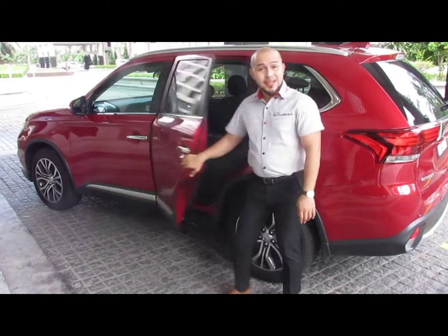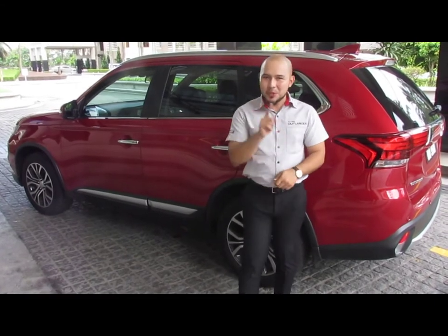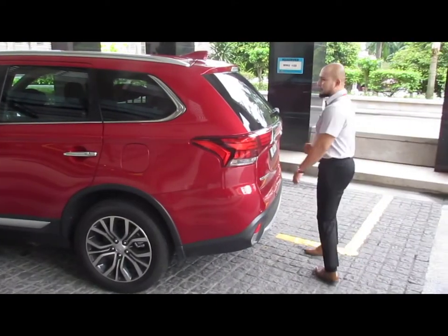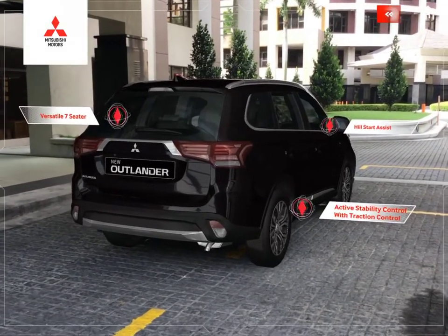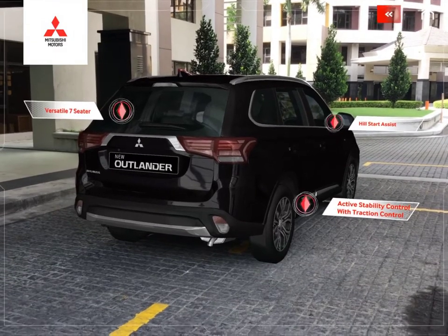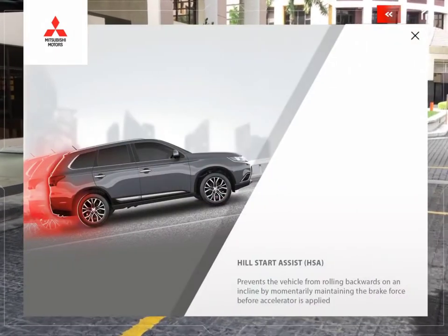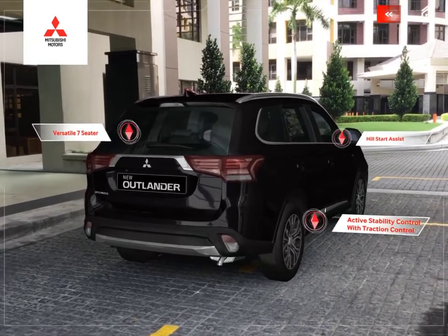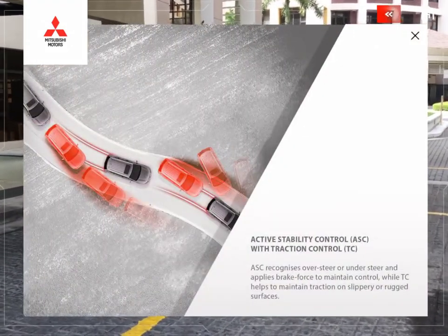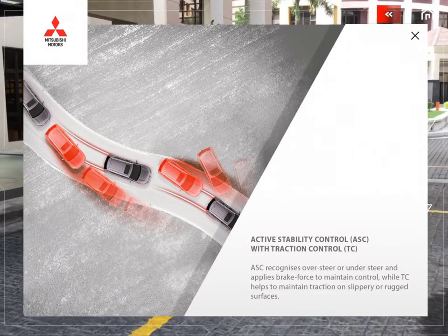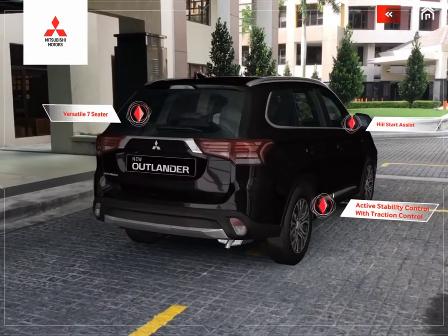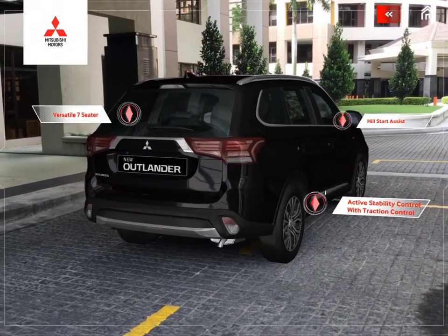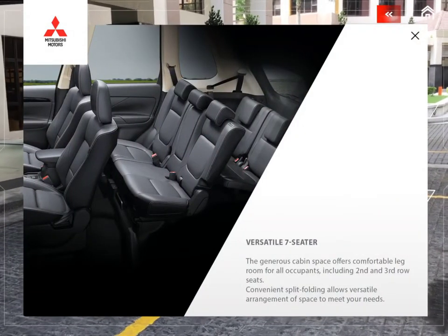Now let's see how the AR can help you to promote the other best features of this Outlander — this time from the back view. Beside passive safety, the Mitsubishi Outlander provides active safety such as Hill Start Assist to prevent the vehicle from rolling backwards. To ensure the safety of passengers, it also offers Active Stability Control (ASC) to prevent oversteer or understeer, and Traction Control (TC) to maintain traction on any road conditions. Apart from active and passive safety and premium interior features, the Mitsubishi Outlander is complete with a versatile 7-seater with generous cabin space to suit your lifestyle.